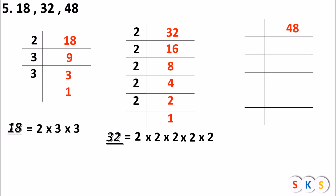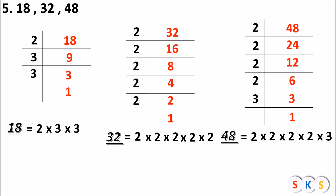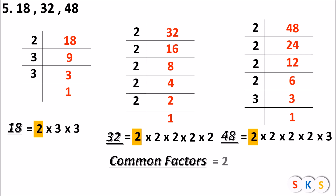Now find the prime factor of 48. 48 ÷ 2 = 24, 24 ÷ 2 = 12, 12 ÷ 2 = 6, 6 ÷ 2 = 3, 3 ÷ 3 = 1. So the prime factor of 48 is 2 × 2 × 2 × 2 × 3. Now find common factors in all three numbers. You can see that 2 is common in all. Therefore, SCF of 18, 32, and 48 is 2.